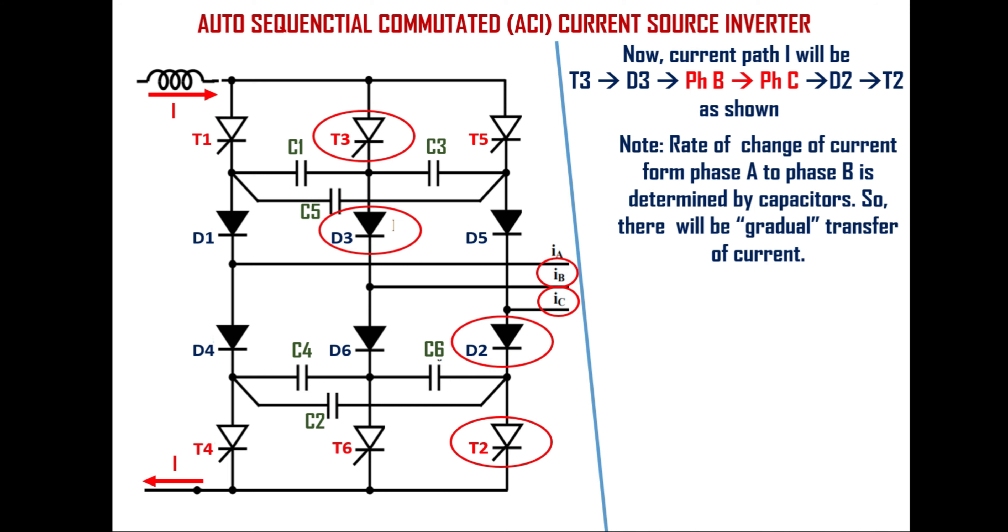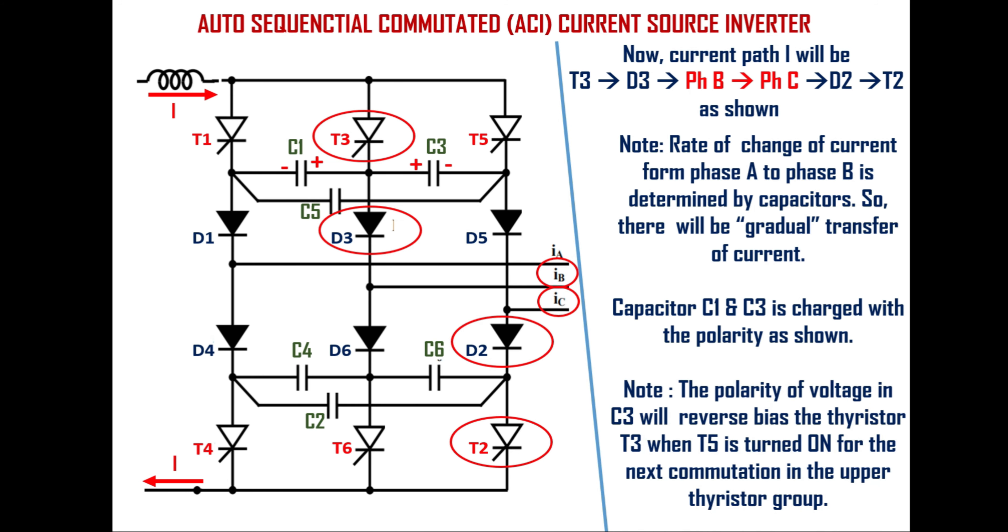During the current transfer capacitor C1 charged with the right plate positive and capacitor C3 is charged with the left plate positive as shown. It is also important to note that the polarity of voltage in capacitor C3 will reverse bias the thyristor T3 when thyristor T5 is turned on, that is for next commutation in the upper thyristor group. So the operation continues.